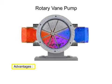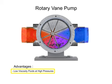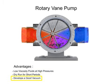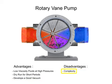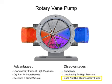The advantages of vane pumps are that they can handle low viscosity fluids at relatively higher pressures, can dry run for short periods, and develop a good vacuum. Their disadvantages include complexity and unsuitability for both high pressure and high viscosity fluids.